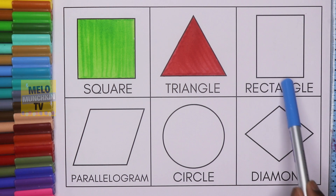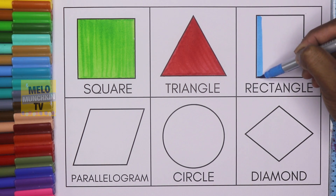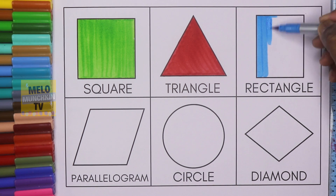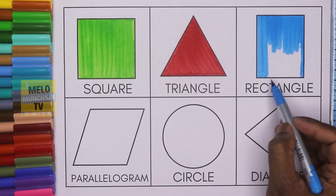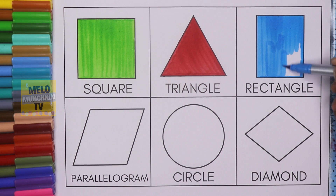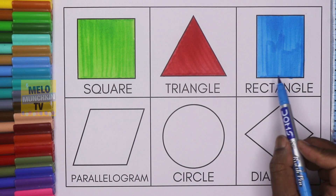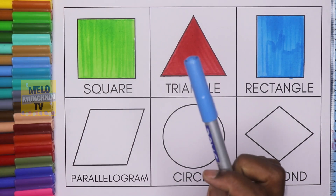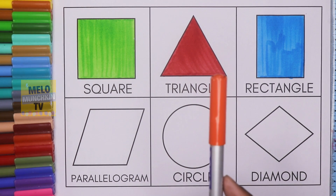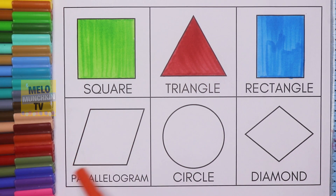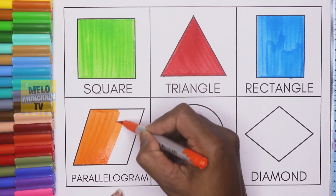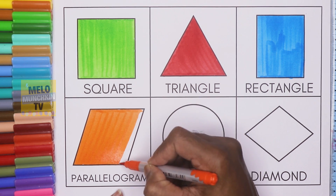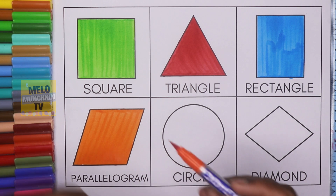This is rectangle, let's color it. This is rectangle and the color is light blue. Next, I'll take orange color to color this shape. This is called parallelogram, let's color it.